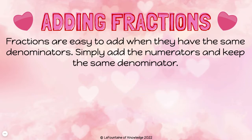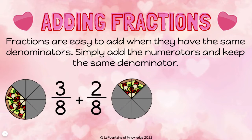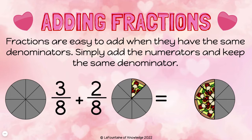Fractions are easy to add when they have the same denominators. We simply add the numerators and keep the denominators the same. Let's try adding three eighths plus two eighths. It's like taking the pieces from the three eighths pizza and the pieces from the two eighths pizza and putting them together. I can see that three eighths plus two eighths equals five eighths.